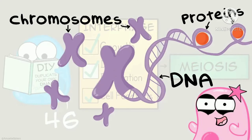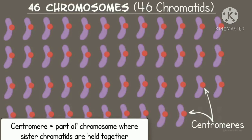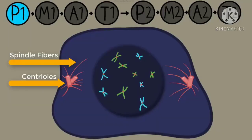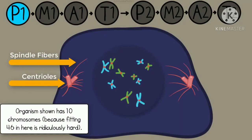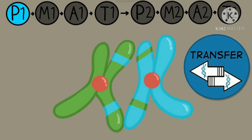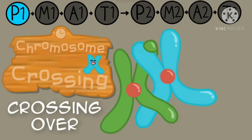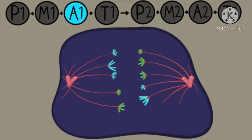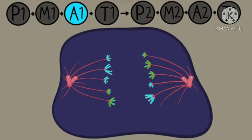Prior to meiosis, each chromosome in the diploid germ cell has replicated and thus consists of a joined pair of duplicate chromatids. Meiosis begins with the contraction of chromosomes in the nucleus of the diploid cell. Homologous paternal and maternal chromosomes pair up along the midline of the cell; each pair, called a tetrad or bivalent, consists of four chromatids. At this point, the homologous chromosomes exchange genetic material by the process of crossing over. The homologous pairs then separate, each being pulled to opposite ends of the cell, which then pinches in half to form two daughter cells.